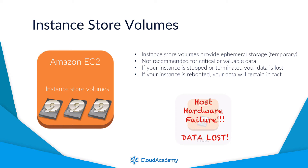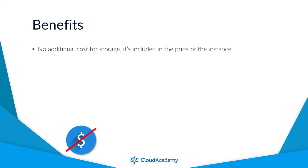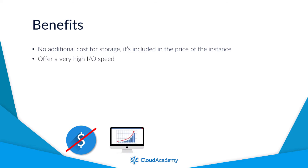So you might be thinking, why use these volumes? What use do they have if there is a chance that you are going to lose data? They do in fact have a number of benefits. From a cost perspective, the storage used is included in the price of the EC2 instance, so you don't have an additional spend on storage costs. The IO speed on these volumes can far exceed those provided by the alternative instance block storage, EBS.